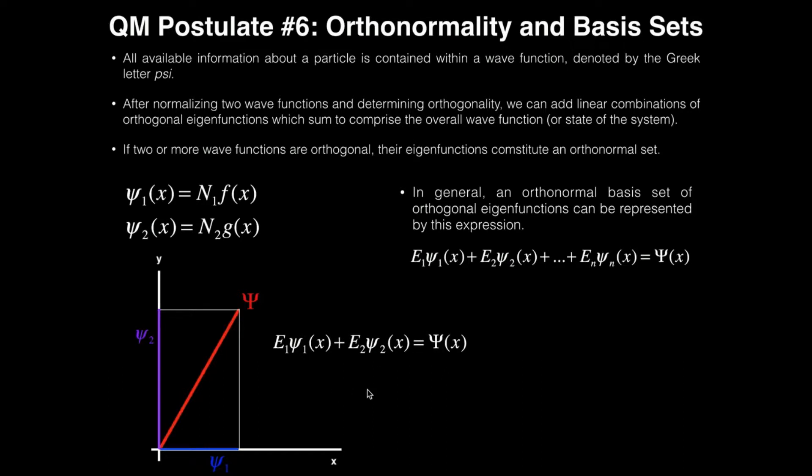Now, the reason this doesn't look like a typical Pythagorean theorem with the squares and so forth is because these are vectors, and so what I'm doing is I'm actually adding together linear combinations of the wave functions to yield the total wave function. So if you have multiple wave functions that are orthogonal to each other, you can actually make linear combinations of them and basically add them up to compute a total wave function.